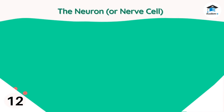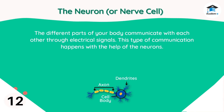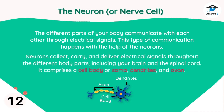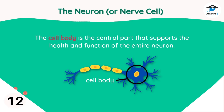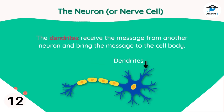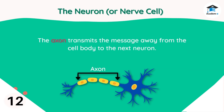The different parts of your body communicate with each other through electrical signals, with the help of neurons. Neurons collect, carry, and deliver electrical signals throughout the different body parts including your brain and spinal cord. A neuron comprises a cell body or soma, dendrites, and an axon. The cell body is the central part that supports the health and function of the entire neuron. The dendrites receive messages from another neuron and bring them to the cell body. The axon transmits the message away from the cell body to the next neuron.